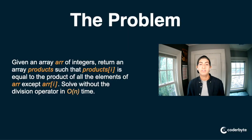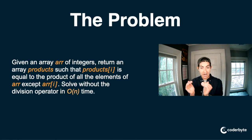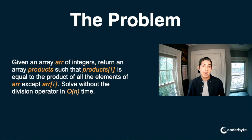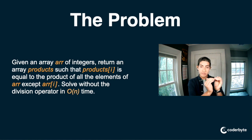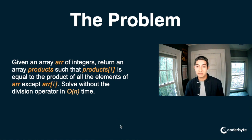And now for this week's problem. Given an array R of integers, return an array called 'products' such that products at index I is equal to the product of all of the elements of R except for R at I. Solve without the division operator with a Big O of N. Basically, we are given an array of integers and we have to return a new array called products where at every index I, the value equals the product of all the other numbers except for the number at that index in the original array.